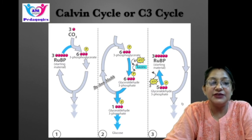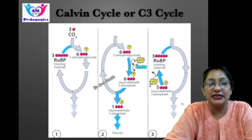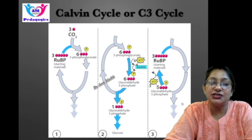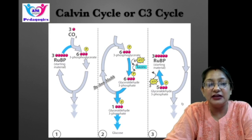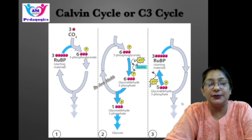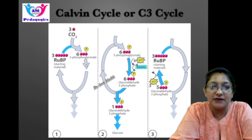The last step is regeneration. In this third stage of the Calvin cycle, which requires ATP, some of the G3P molecules are used to produce glucose while others are recycled to regenerate the RuBP acceptor.